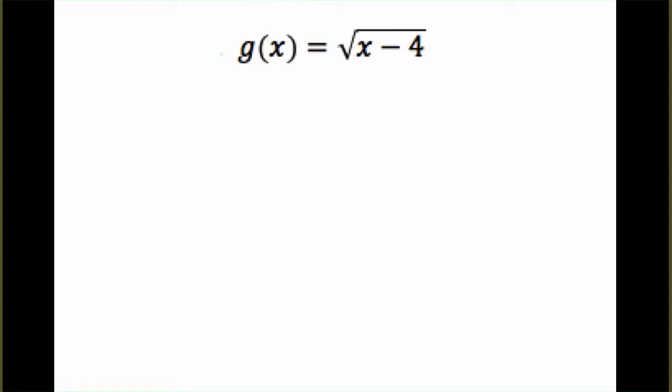Let's look at a second example. g(x) equals the square root of x minus 4. We're going to start by listing the operations in order that are being done to x. If we were evaluating this function, the first thing we would do is subtract 4. And then the second thing we would do is apply the square root.